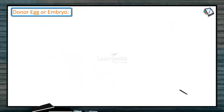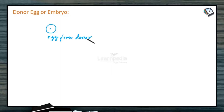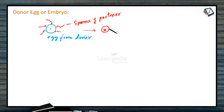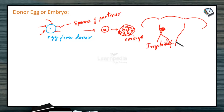Another method is donor egg or embryo. In this procedure, if a woman is unable to conceive using her own eggs, an egg is donated by another woman, mixed with the sperms of her partner, resulting in the formation of a zygote. This zygote is further developed into either the 8-cell stage or more — that is, the blastocyst stage — and then this embryo is implanted into the uterus for further development. The zygote or embryo can even come entirely from a donor.